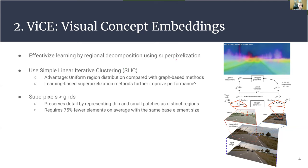We also show that superpixels are better than using uniform grids because they preserve details such as thin and small patches as distinct regions. Superpixels also require substantially fewer elements on average when you have the same base element size.